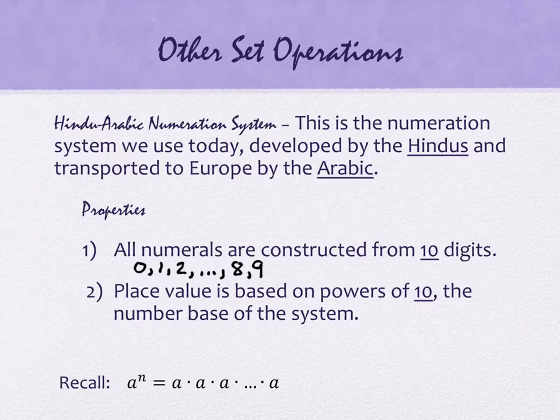You'll see very quickly that there's another numeration system that's base 20. Any idea why base 20 might have been a system that they tried? Fingers and toes — it's the Mayans. The Mayans wouldn't have had shoes, or if they did, they had sandals so you could see the toes. So they've got a base 20 number system with some other caveats.